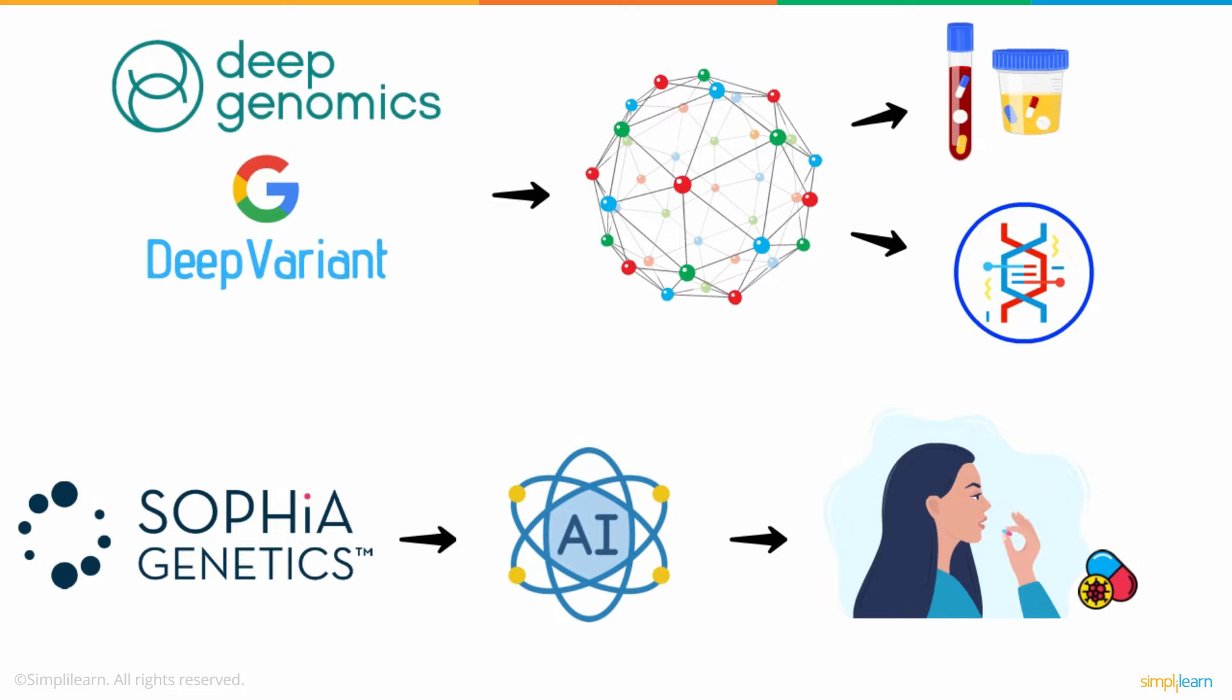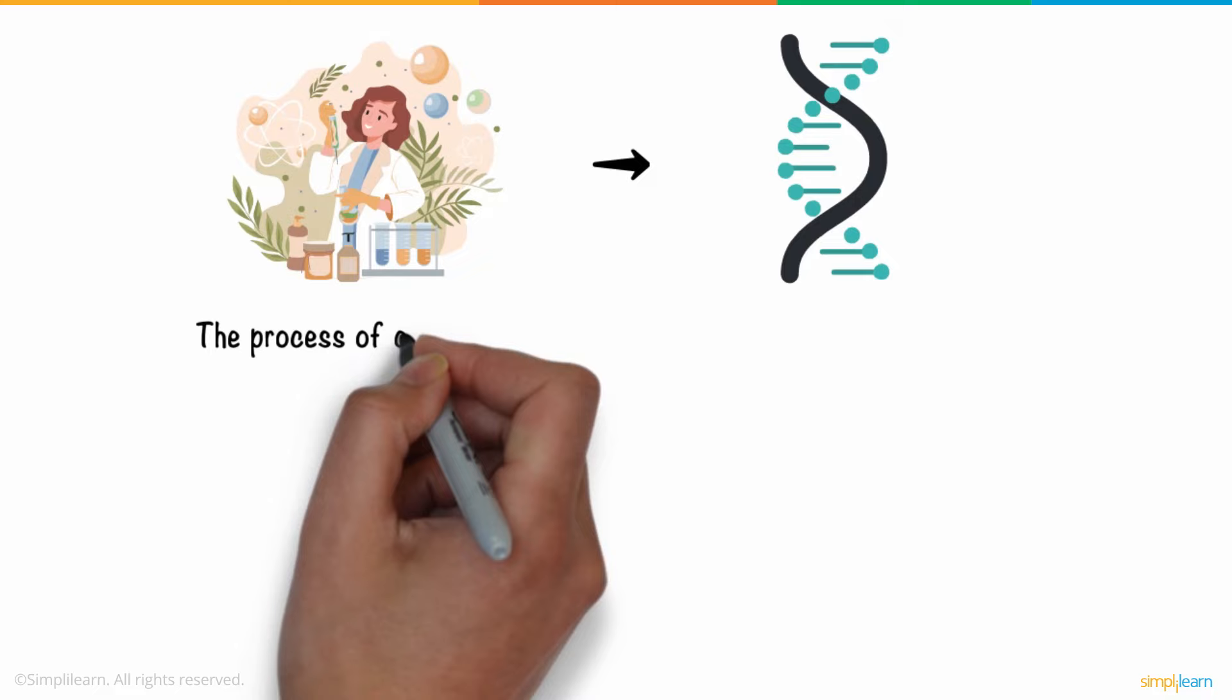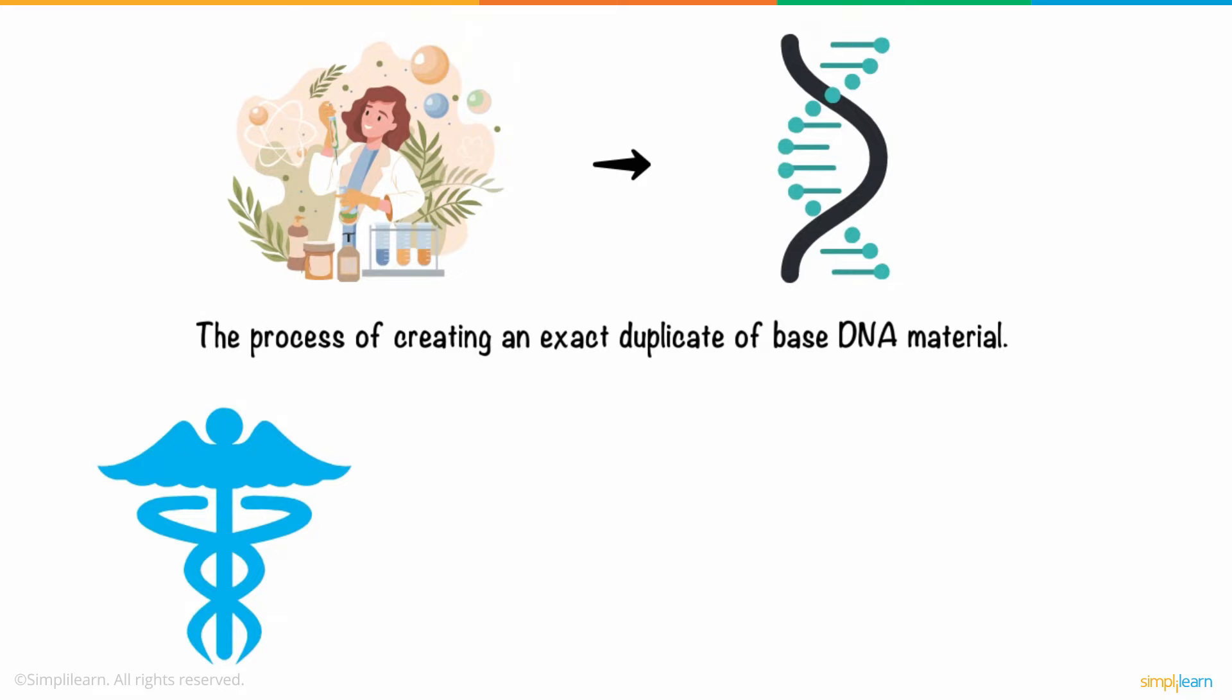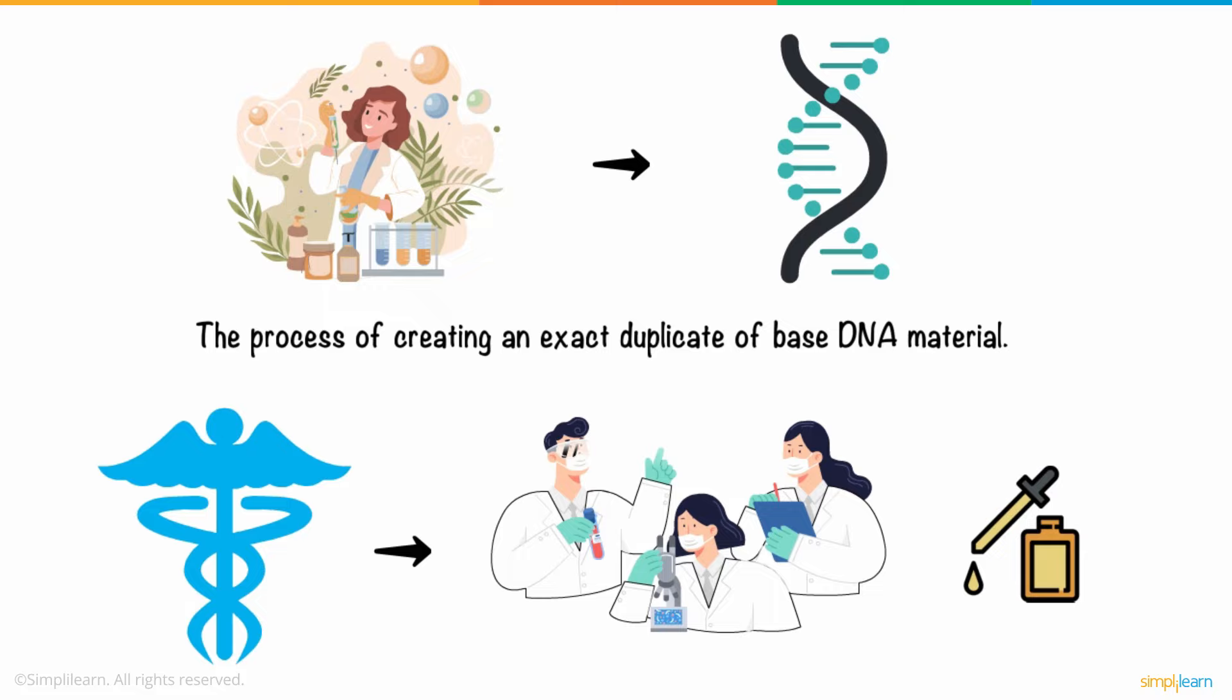Scientists have also been able to perform gene cloning, which is essentially the process of creating an exact duplicate of base DNA material. This is especially helpful in medical fields, where gene cloning can accelerate the rapid testing of vaccines and serums.